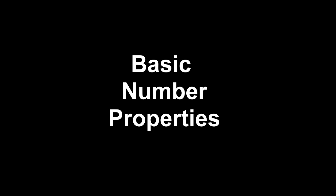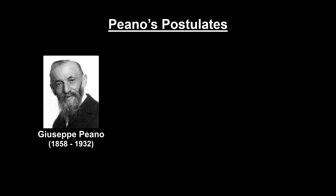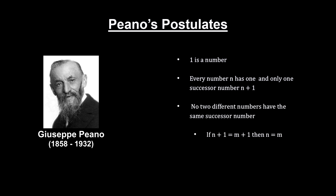In the late 1800s, the mathematician Giuseppe Peano produced a set of axioms, or postulates, that can be used to develop number properties. In simple terms, starting with the counting numbers, they are as follows. 1 is a number. Every number n has one and only one successor number, n plus 1. And no two different numbers have the same successor number. In other words, if n plus 1 equals m plus 1, then n has to equal m.